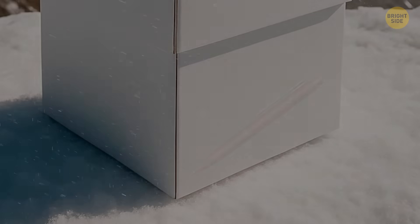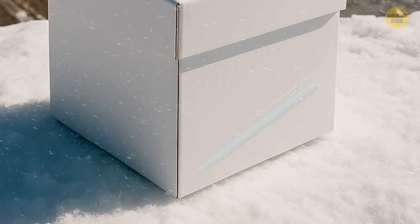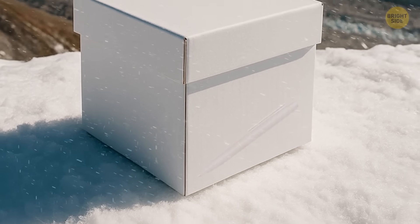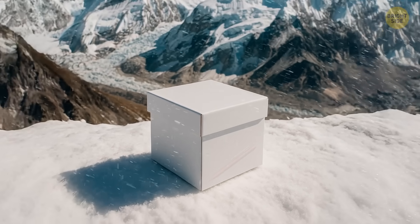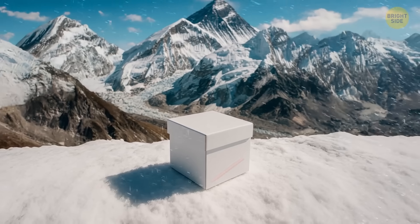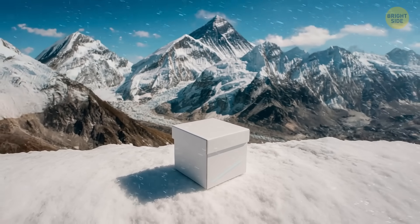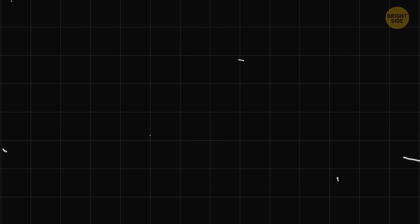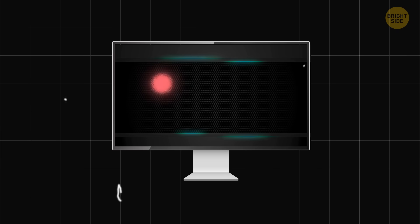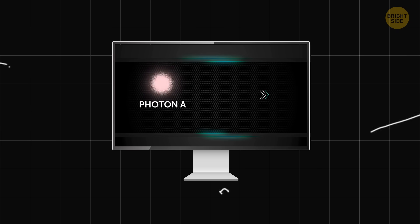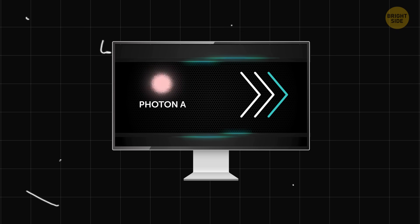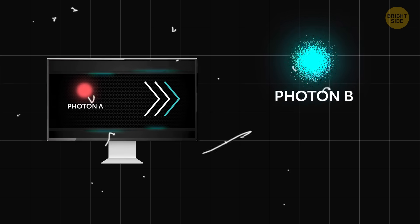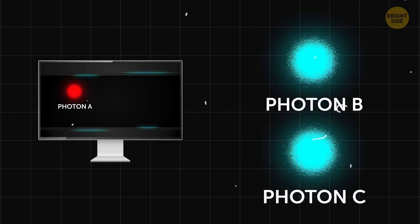So, the particle is in a superposition. That is, it can be in all states at the same time until you look at it. Like that box with the pen on Everest. And here's what the scientists did. Imagine that you have a particle of light, photon A. This is the photon you want to teleport. You also have photons B and C, which are already entangled.